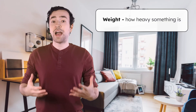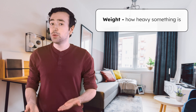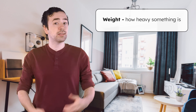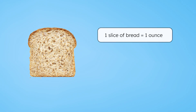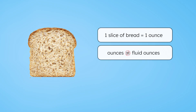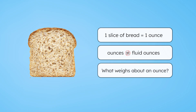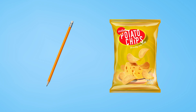First, we should talk about what weight means. Weight is the measure of how heavy something is. We use different units to measure weight depending on how heavy or light the object is. A slice of bread weighs about one ounce. Ounces are a measure of weight, but don't confuse them with fluid ounces, which measure volume. Even though they share the word ounce, they're two completely different measurements. Today we're focusing on ounces as the smallest unit of weight. A pencil weighs about an ounce, and a small bag of chips weighs just a few ounces too.